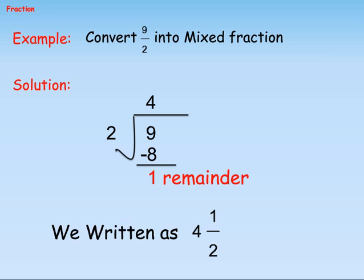Example: Convert 9/2 into a mixed fraction. Solution: On dividing nine by two, we get quotient four and remainder one. So 9/2 can be written as 4 and 1/2.